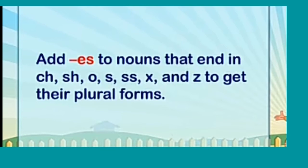Now, when do we add S and when do we add ES to form a plural noun? We add ES to nouns that end in CH, SH, O, S, SS, X, and Z to get their plural forms.